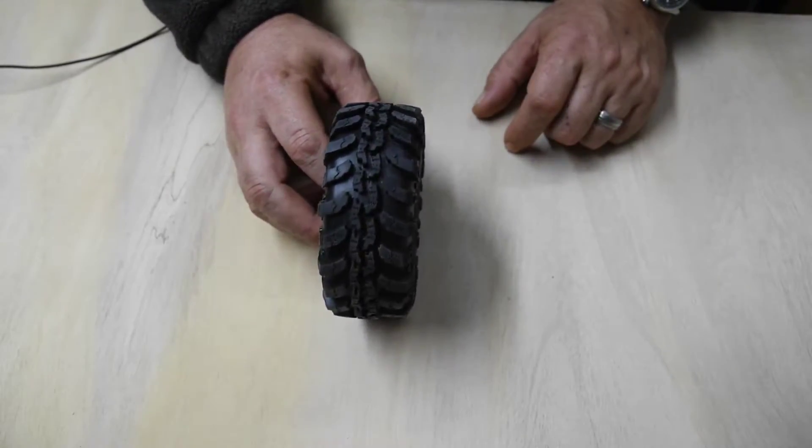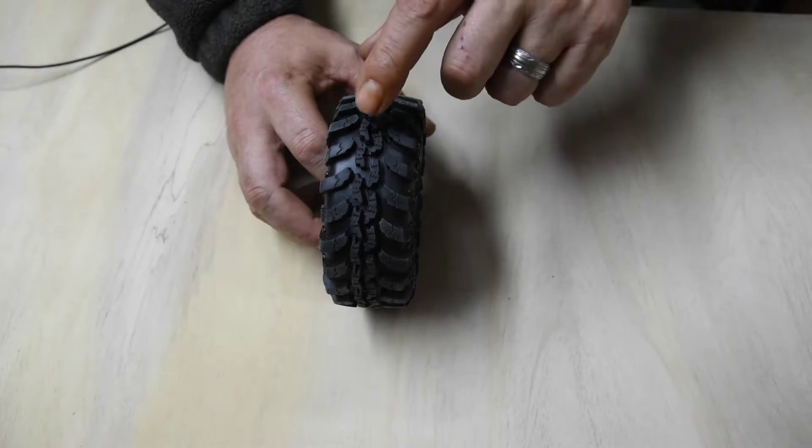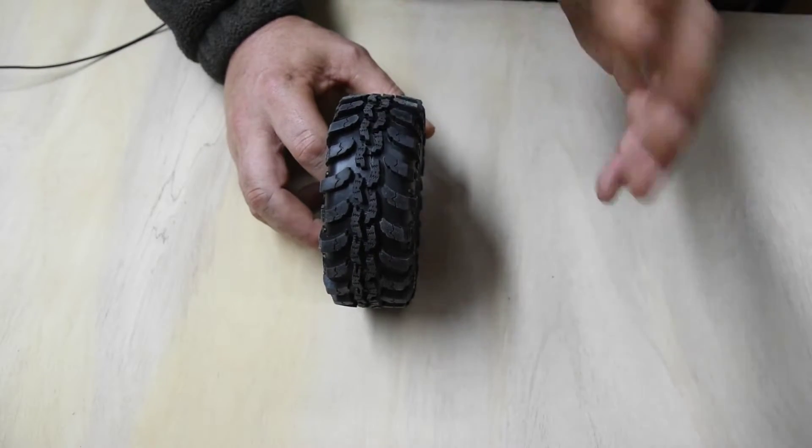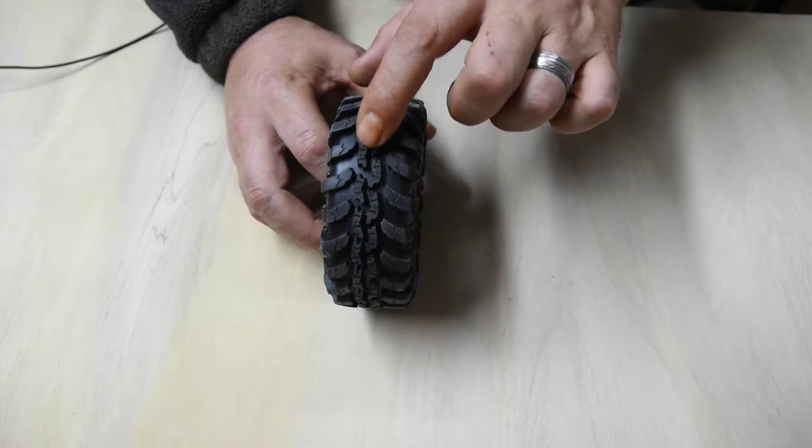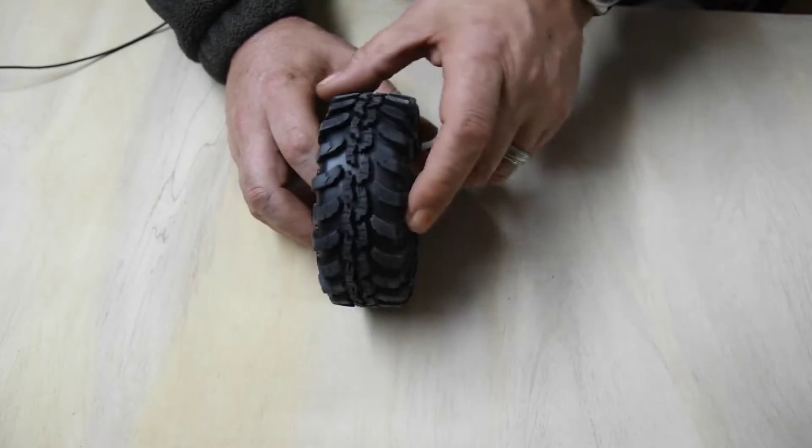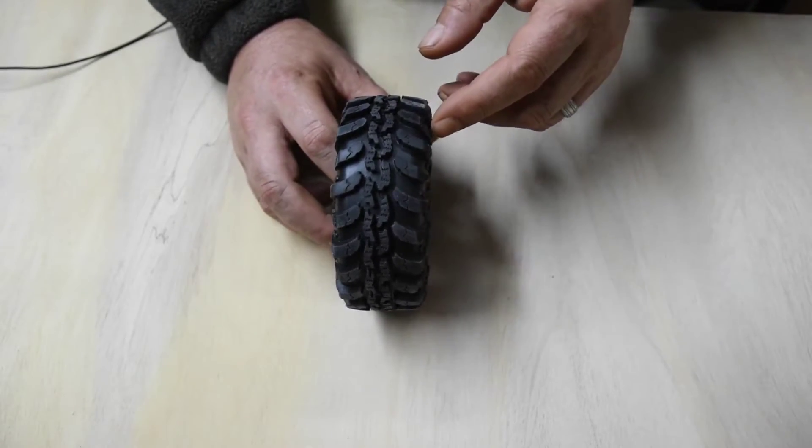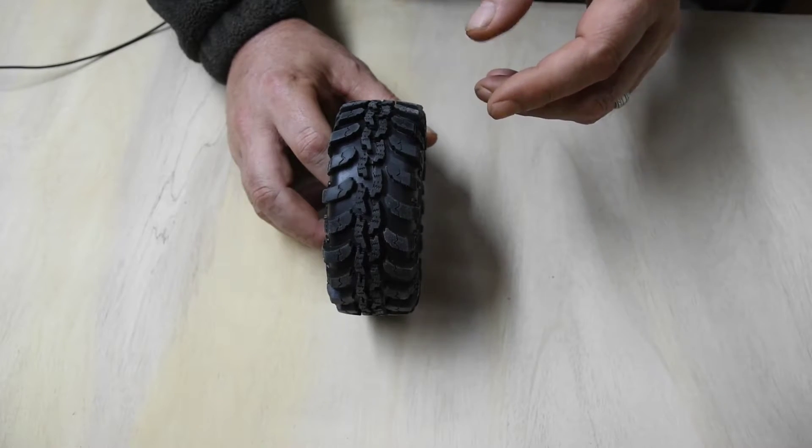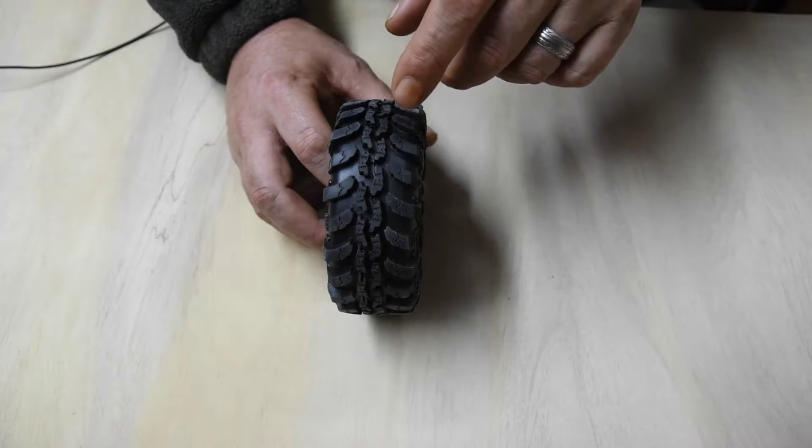So the tire I'm going to be using as an example tonight is off of a Red Cat Gen 8, pretty much a typical tire, and in fact this one still has a memory foam in it from when I bought the truck. At this point I'm running different tires and foams, but we'll talk about that in another video.